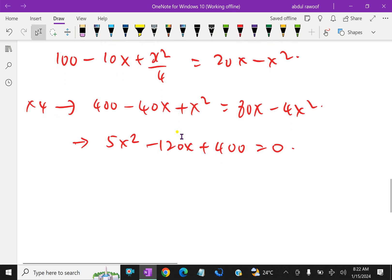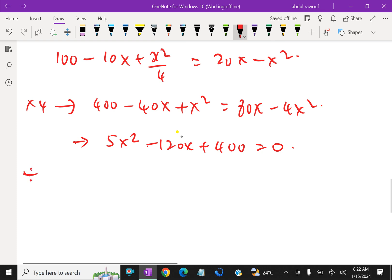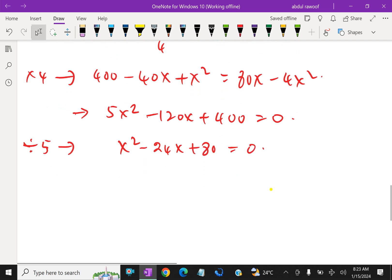Now further divide by 5 throughout: 5x squared over 5 is x squared, 120 divided by 5 is minus 24x, 400 divided by 5 plus 80. This is a quadratic equation.